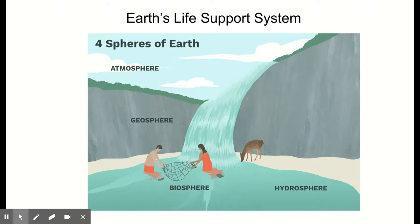Finally, there's the biosphere. This consists of the parts of the atmosphere, geosphere, and hydrosphere where life is found — all the parts where living things are found. The biosphere is definitely the smallest component of earth's life support system.